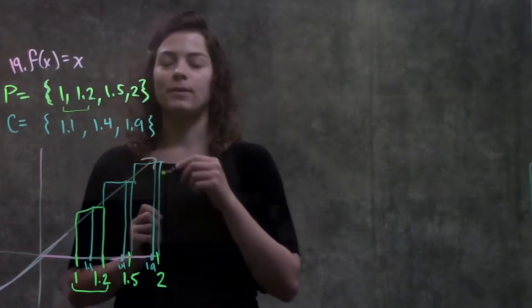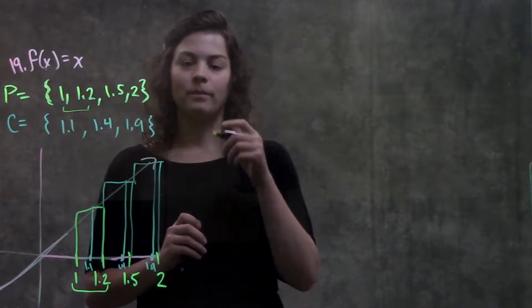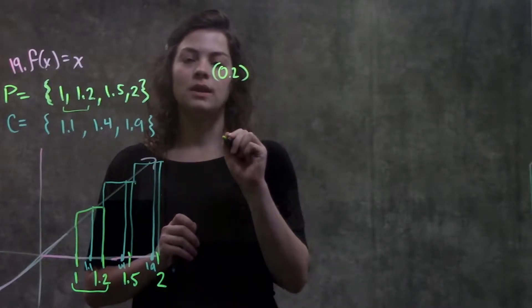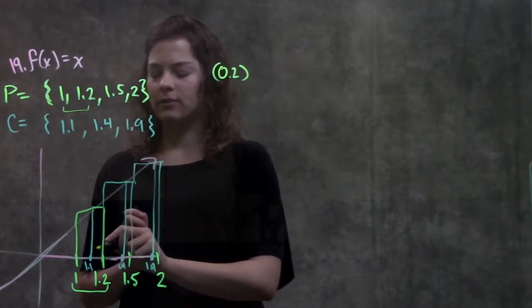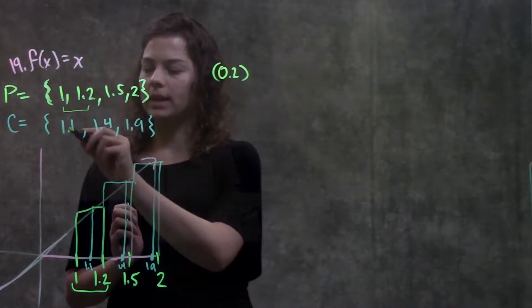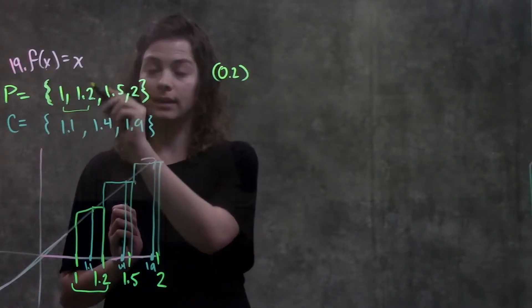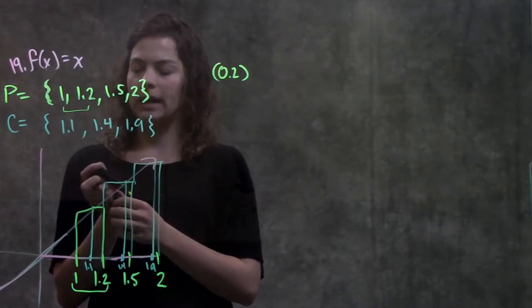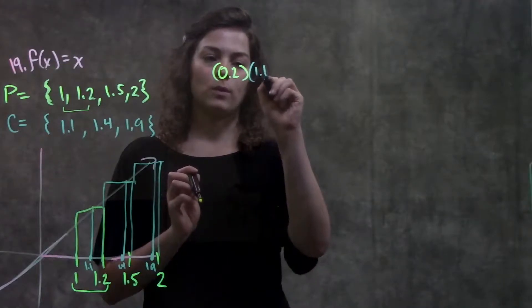My first width here is the difference between 1.2 and 1. 1.2 minus 1 just leaves us with 0.2 times the height of this rectangle is whatever you get when you plug in this C point into the function. So when I plug 1.1 in for my function and for x, I get just 1.1.